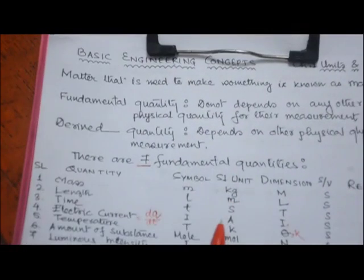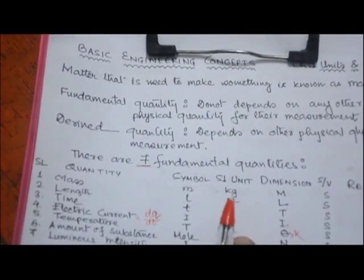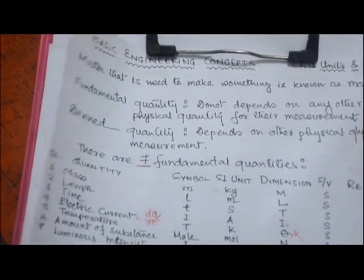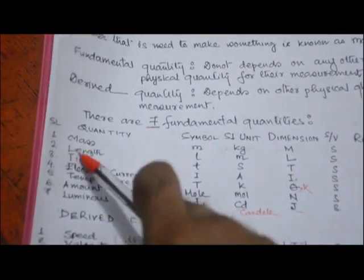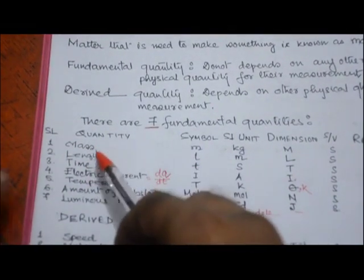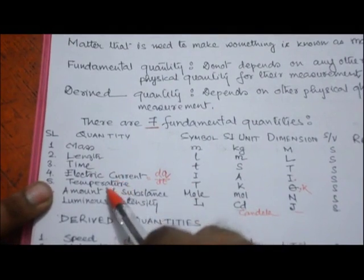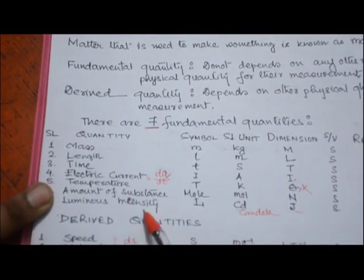There are seven fundamental quantities. Remember, there are only seven. These are: mass, length, time, electric current, temperature, amount of substance, and luminous intensity.